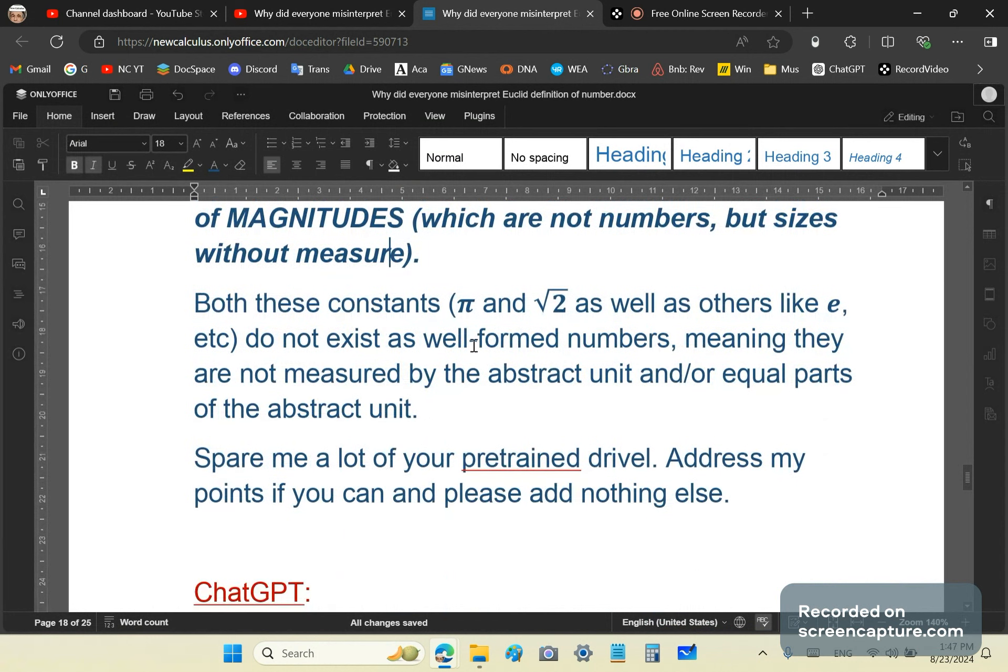So pay attention now. Both these constants, π and √2, as well as others like e, etc., do not exist as well-formed numbers. What does this mean? This means they are not measured by the abstract unit. The abstract unit, which is 1 and all the other numbers that follow from it: 2, 3, 5 halves, 10, 15, etc. So it's not measured by the abstract unit and or equal parts of the abstract unit.